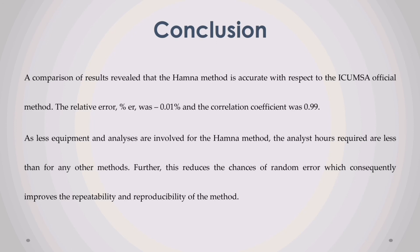Conclusion. A comparison of results revealed that the Hamner method is accurate with respect to the ICUMSA official method. The relative error was 0.01 percent and the correlation coefficient was 0.99. As less equipment and fewer analyses are involved for the Hamner method, the analyst hours required are less than for any other method. Further, this reduces the chances of random error, which consequently improves the repeatability and reproducibility of the method.